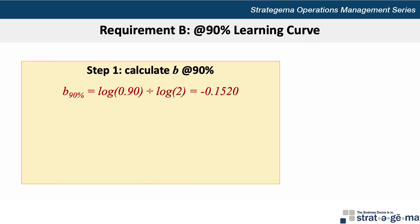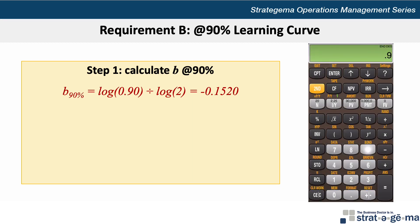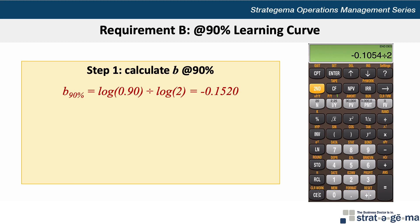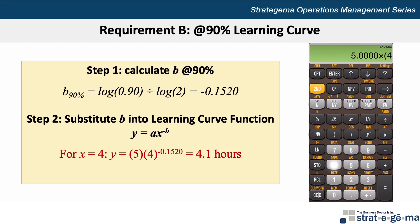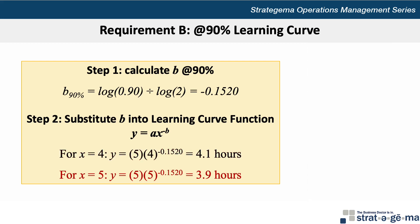If the learning curve was 90%, the assumption is that it takes 90% of the time to install the fourth copier compared to the second. We would determine b to be log 0.90 divided by log 2, which equals negative 0.1520. Then substitute into the learning curve function for the fourth and fifth installations. The fourth installation would take 4.05, or about 4.1 hours, calculated as 5 times 4 to the exponent negative 0.1520. Using the calculator without recalling: 5 times, open parenthesis, 4, yx, 0.1520, then press the plus-minus button, close parenthesis, and enter equals.